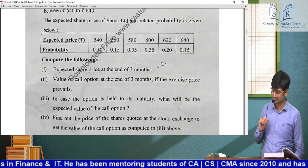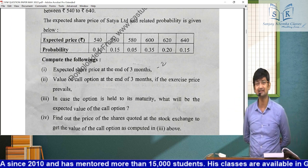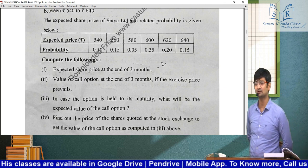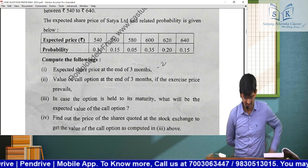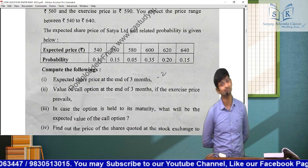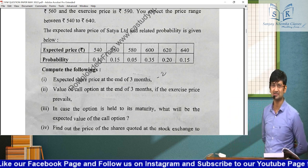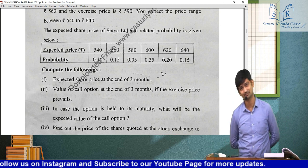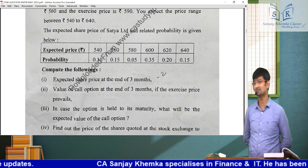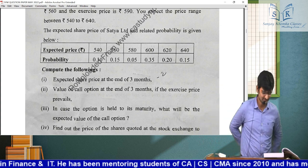Part 4 was interesting — find the price of the shares at the stock exchange to get the value of the call option as computed in part 3. On maturity, time value is gone, so: if exercise price is ₹590 and call value is ₹10, then S0 should be ₹600 (590 + 10 = S - E = 10). It was a small interesting reverse-calculation variation — if you know C = ₹10 and E = ₹590, find what S should be.